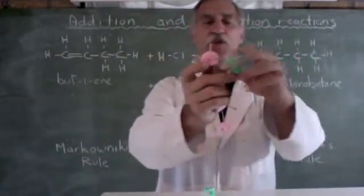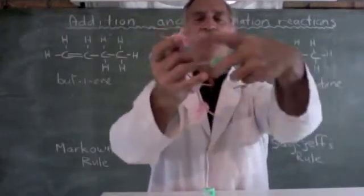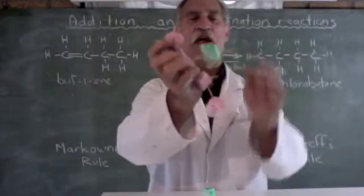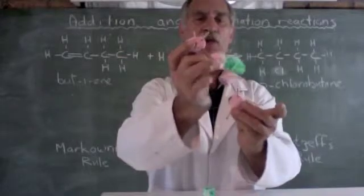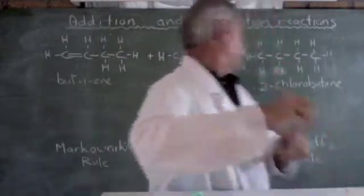And look, there we've got our 2-chlorobutane. So what did we do? We broke the bond, stretched it out, pulled off the hydrogen, put it on there, and put our chlorine on here. And there we have marshmallow molecule showing 2-chlorobutane.